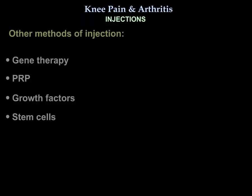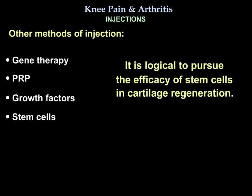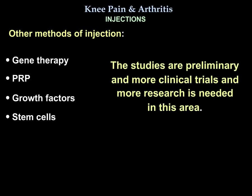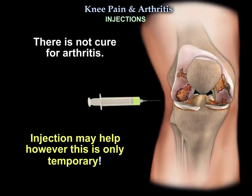Other methods of injection include gene therapy, PRP, growth factors, and stem cells. It is logical to pursue the efficacy of stem cells in cartilage regeneration. The studies are preliminary and more clinical trials and research are needed in this area. There is no cure for arthritis. Injections may help; however, this is only temporary.